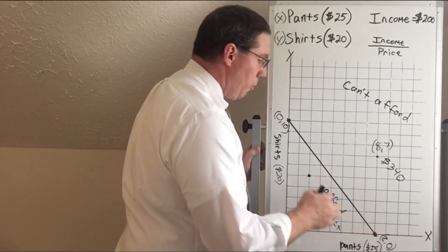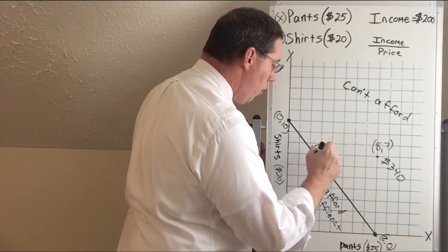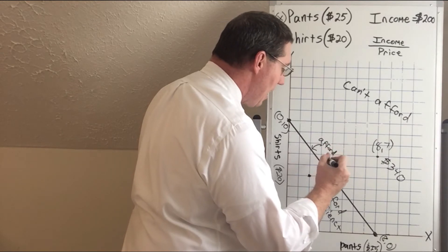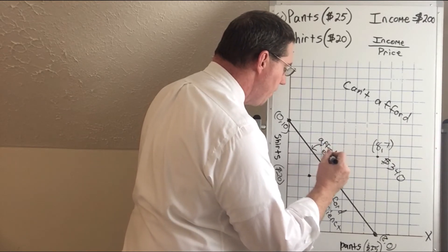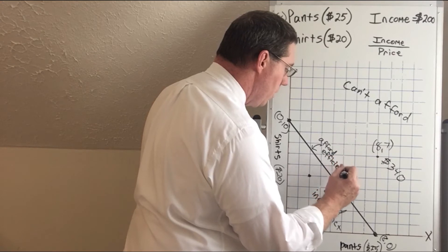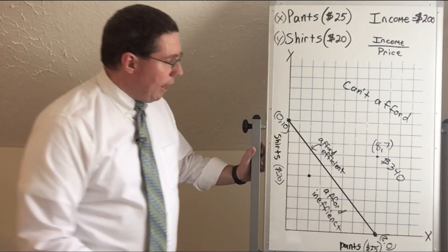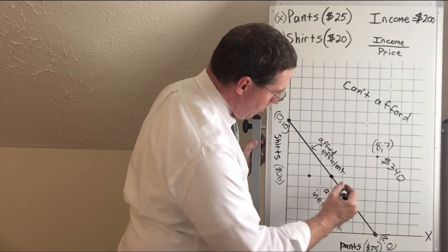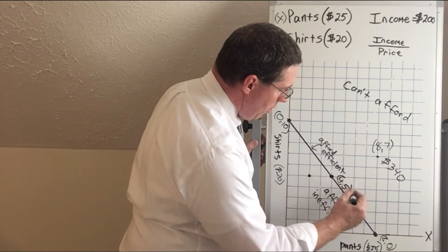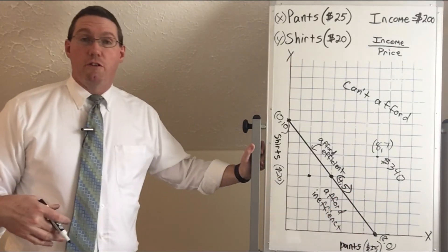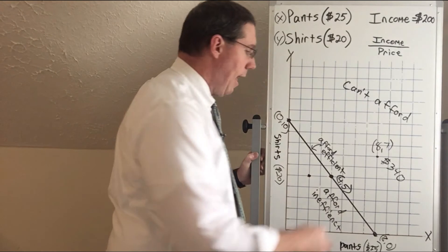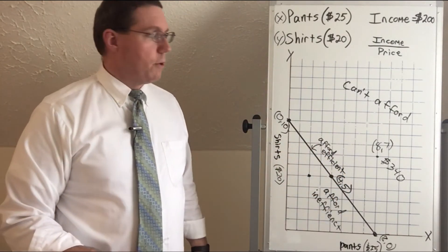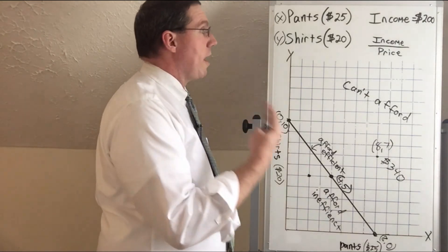The on-the-line region is where we want to be. Right on the line, we can afford those purchases and it is efficient — it uses all of our resources. For example, one of the best points is four pairs of pants and five shirts, which is an efficient use of the $200 and gets us the most we can get out of that budget.